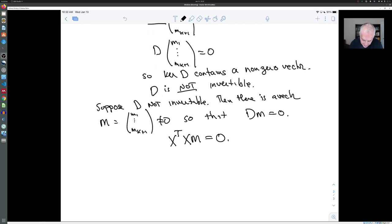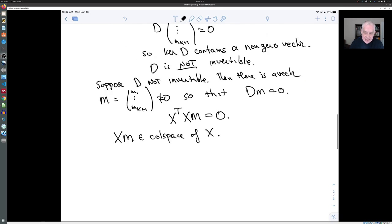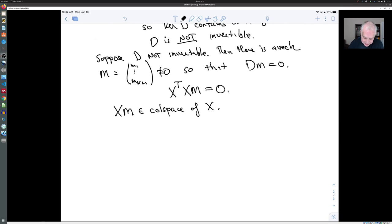So first of all, notice by the same argument that I just made a little while ago, xm is an element of the column space of x. It's a linear combination of the columns of x. So xm belongs to the column space of x. Now, when you multiply x transpose times xm, this is a k plus one by one vector.